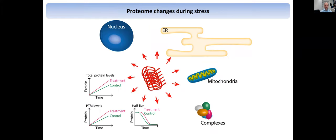Focusing on the proteome, there are of course different aspects that get affected during stress. With an example of protein misfolding, it can do a lot of things: it can change the proteome in the nucleus, affect the ER if you have stress responses there, changing the proteome of specific organelles, also mitochondria. It can change protein-protein interactions and complexes, protein stability where we would need to look into half-lives, total protein levels, and post-translational modifications. So the output of the stress is really multifold.